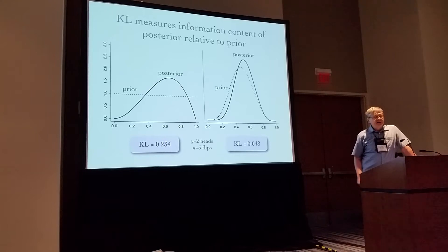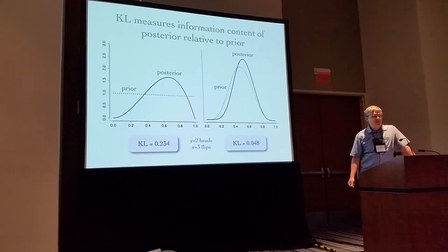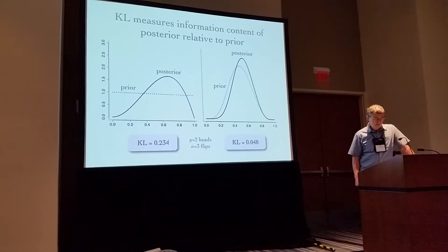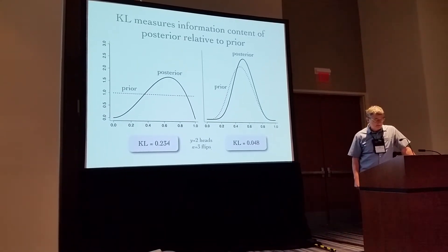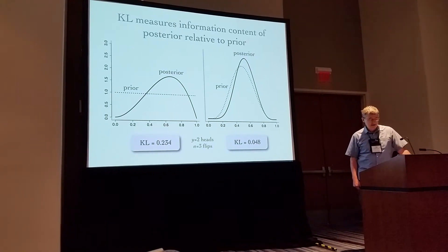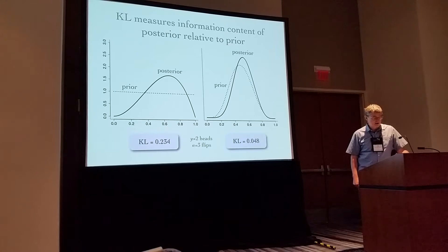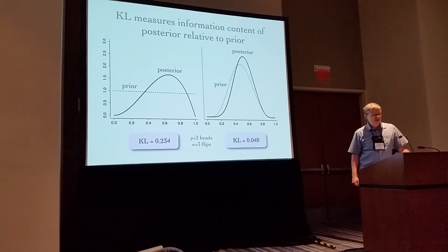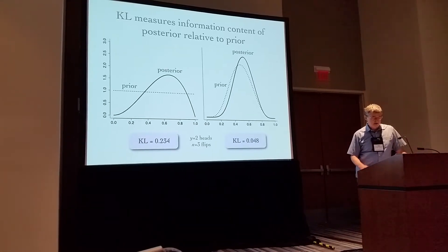It's important to point out that KL measures relative entropy, which matters when the prior itself is informative. Both examples shown here are based on exactly the same data, so the absolute amount of information in the data is the same in both cases. However, KL is smaller on the right because the prior is considerably more informative, so the information provided by the data is largely redundant.